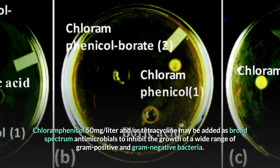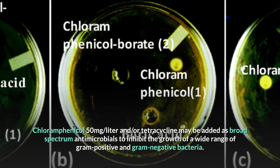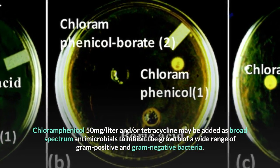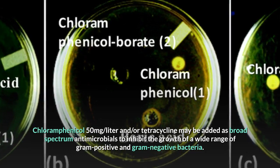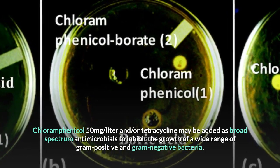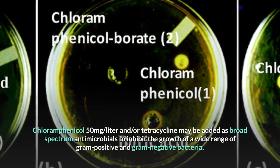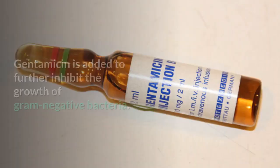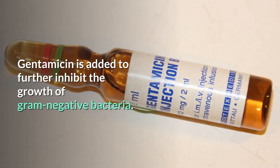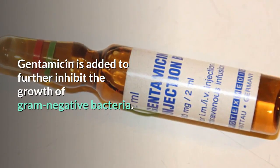Chloramphenicol at 50 mg per liter and/or tetracycline may be added as broad-spectrum antimicrobials to inhibit the growth of a wide range of gram-positive and gram-negative bacteria. Gentamicin is added to further inhibit the growth of gram-negative bacteria.